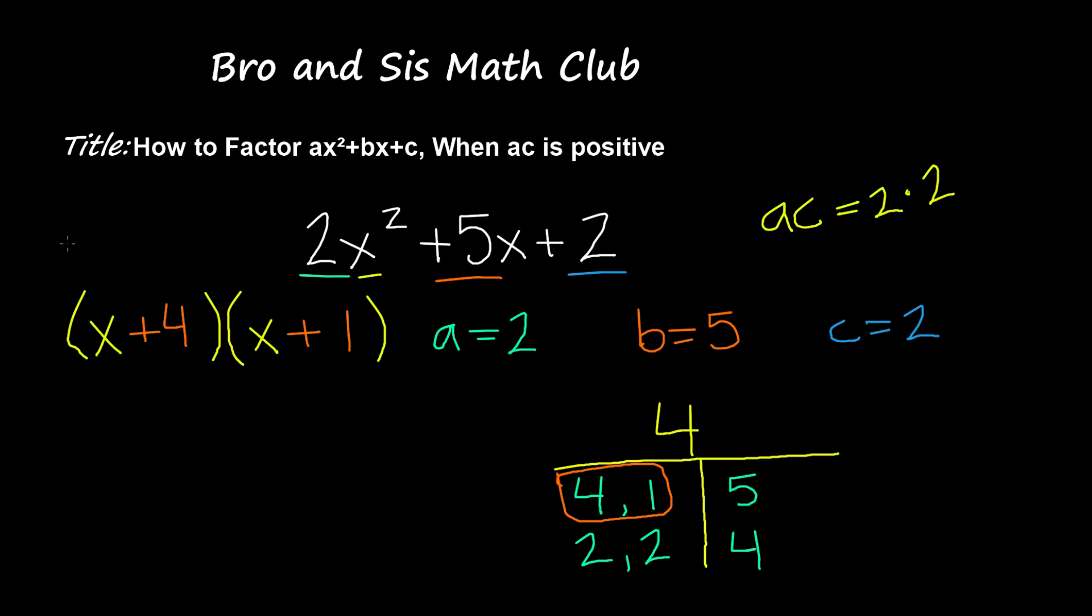But we're still not done here yet. Now what we're going to do, once we have these two binomials, is divide the constants by the a, which is 2. So I'm going to divide the constants by 2. Now 4 divided by 2 gives us 2, so I'm going to write x plus 2. So this 4 divides into 2 evenly.